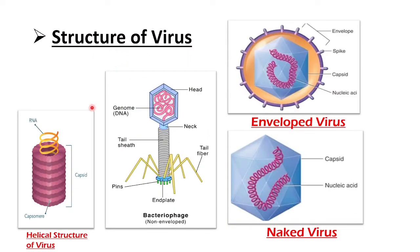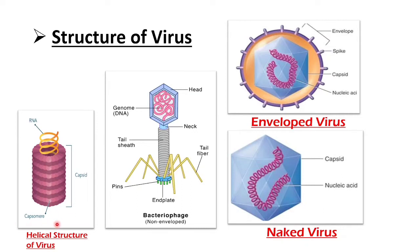This is the helical structure of a virus. As you can see here, RNA is used as the genetic material. This is the capsid and capsomer. As mentioned earlier, many protomers are joined together to form capsomers. The capsid is the protein coat of the virus.